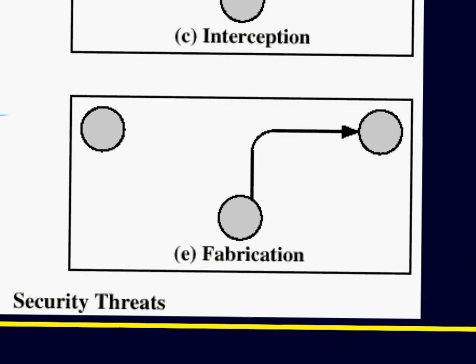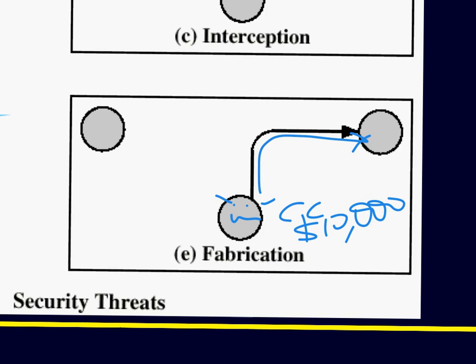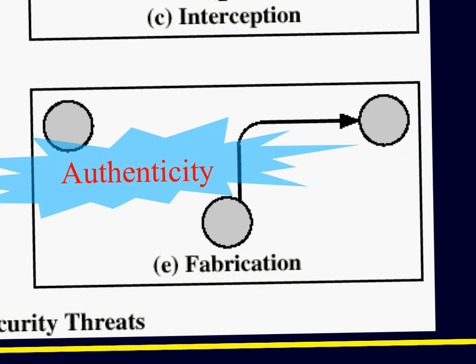The next attack type is fabrication — and I'm not even involved. Mr. Evil decides to make a fake credit card transaction for $10,000 into an account without my participation. That's a fabrication attack, and it's a classic example of an authenticity attack — somebody has stolen my identity and maybe just my credit card details to use my money. This typically happens when people look over your shoulder and see you typing your credit card number, expiry date, and the three-digit CVV code on the back — or by reading your PIN number at an ATM.